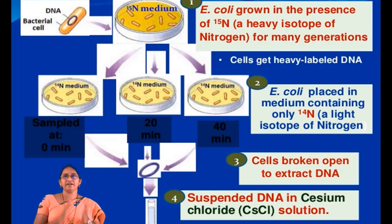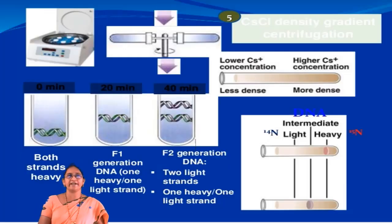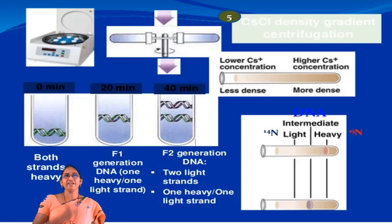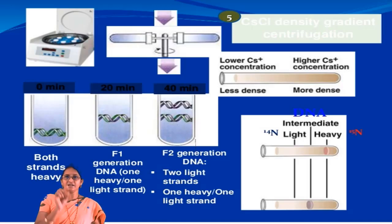After growing bacteria in the light-labelled nutrient broth, Meselson and Stahl studied the density of the DNA using density gradient centrifugation with cesium chloride (CsCl). Density gradient centrifugation separates molecules based on their different densities. The CsCl gradient is greater at the bottom and lighter at the top, so heavier DNA molecules form a band at the bottom and lighter DNA molecules form a band at the top. Mixed hybrid DNA — consisting of both heavy-labelled and light-labelled strands — forms a band in the middle of the tube.